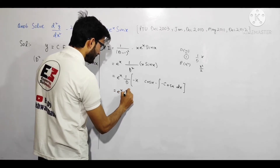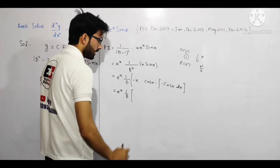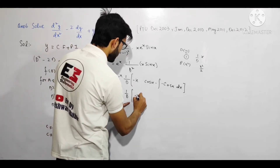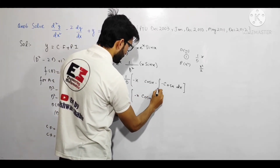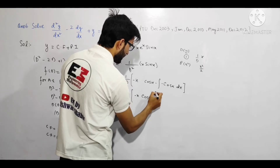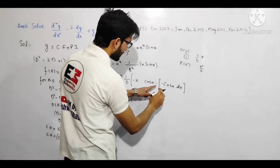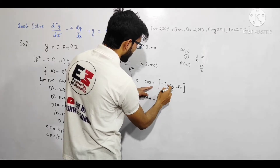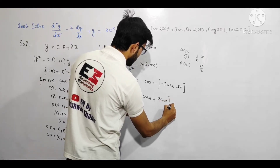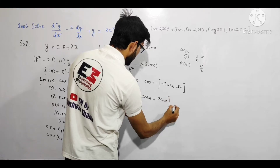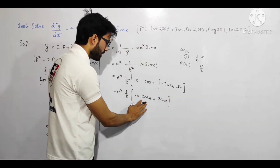Pehli baar integrate karne ke baad result aata hai: eˣ × (1/D) × [-x cos x + sin x]. Minus x cos x aur plus sin x — kyunki -(-cos x) ka integration sin x hota hai. Ab ek aur 1/D bacha hai, toh dobara integrate karna hoga.